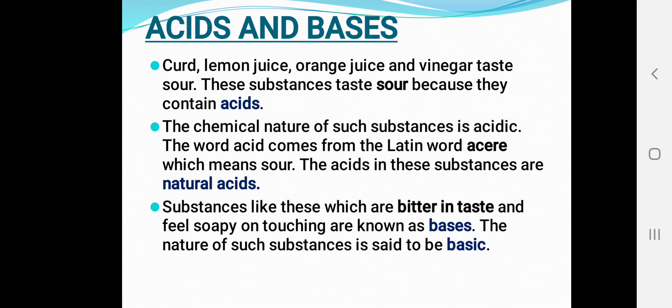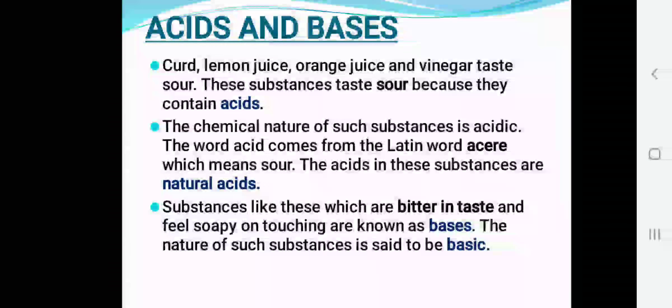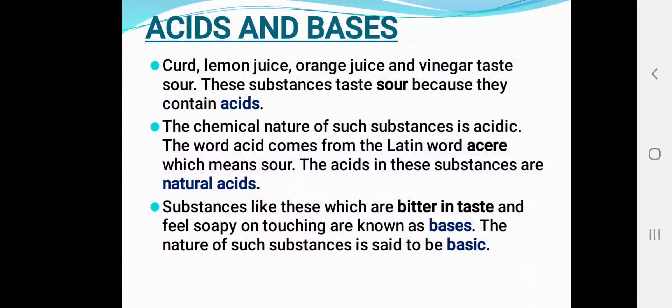For example, acids are found in curd, lemon juice, orange juice, and vinegar. These all taste sour. These substances taste sour because they contain acid. Curd, lemon juice, orange juice, and vinegar — these all contain acid, so that's why they taste sour.